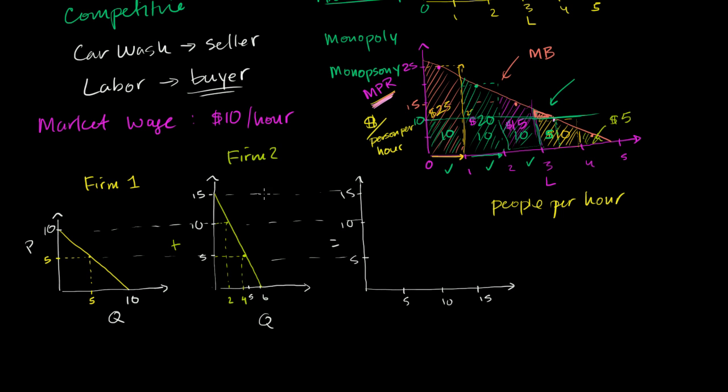So at a price of 15 in the market, what is the total quantity demanded? Well, it's still going to be 0, because even this firm is still demanding 0. But then if we go to a price of 10, this firm, the firm 1 is demanding 0, but firm 2 over here is demanding 2.